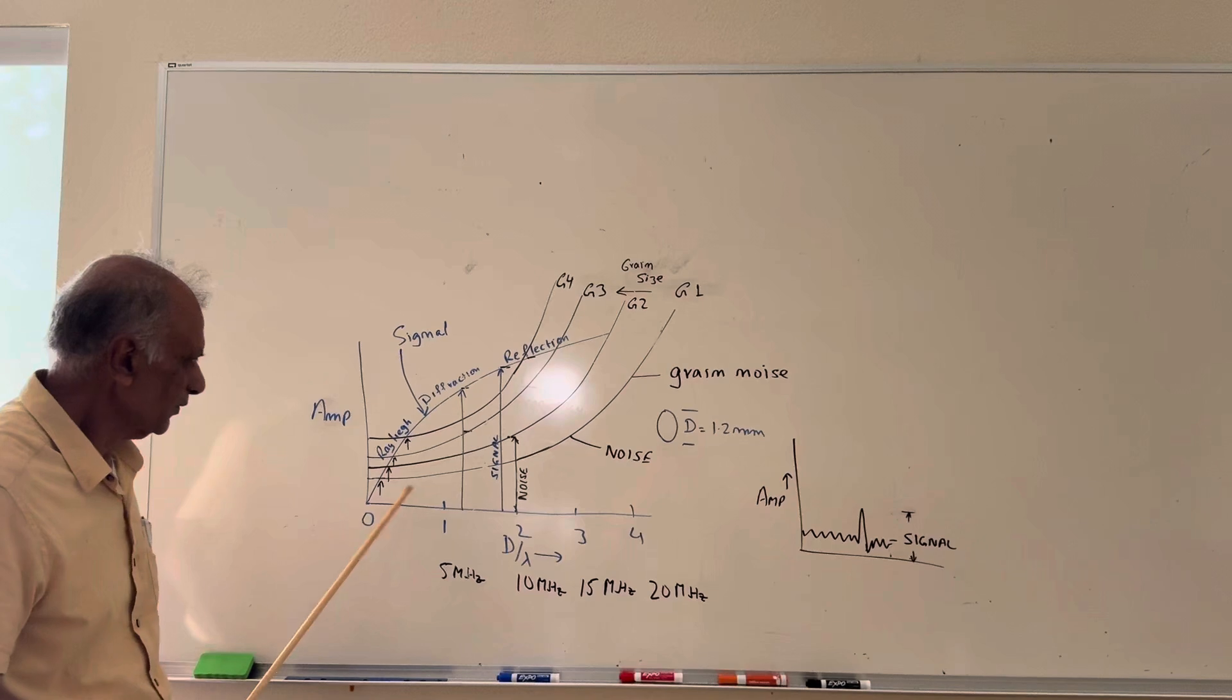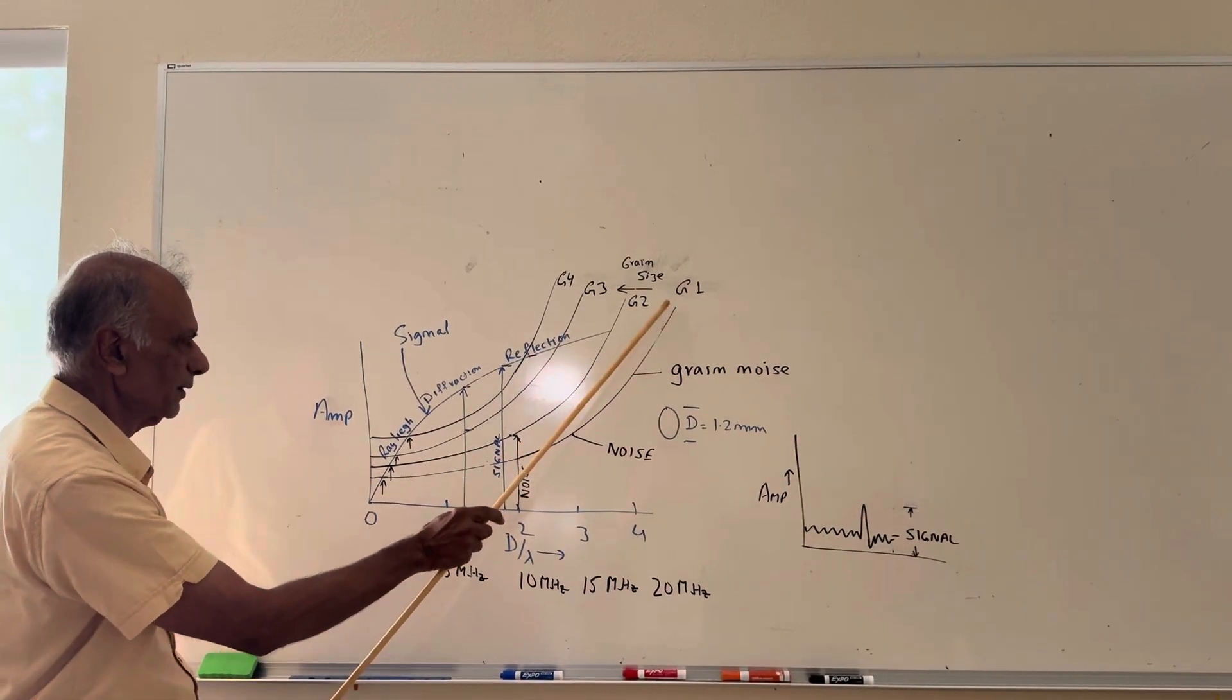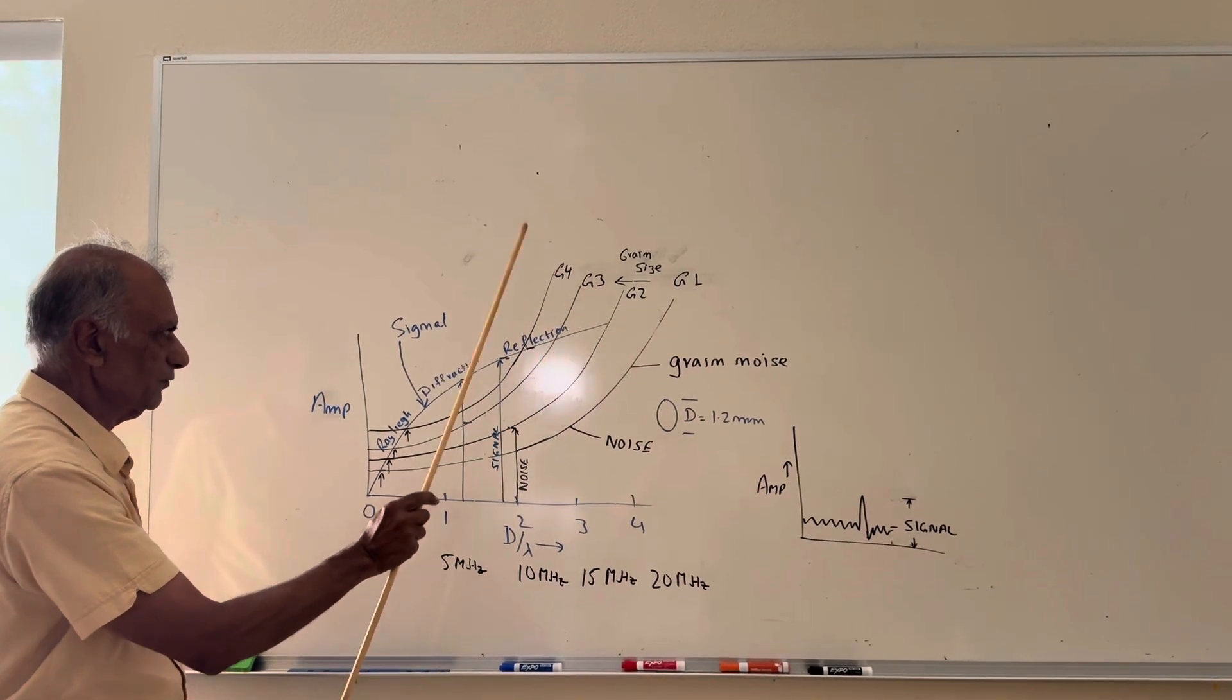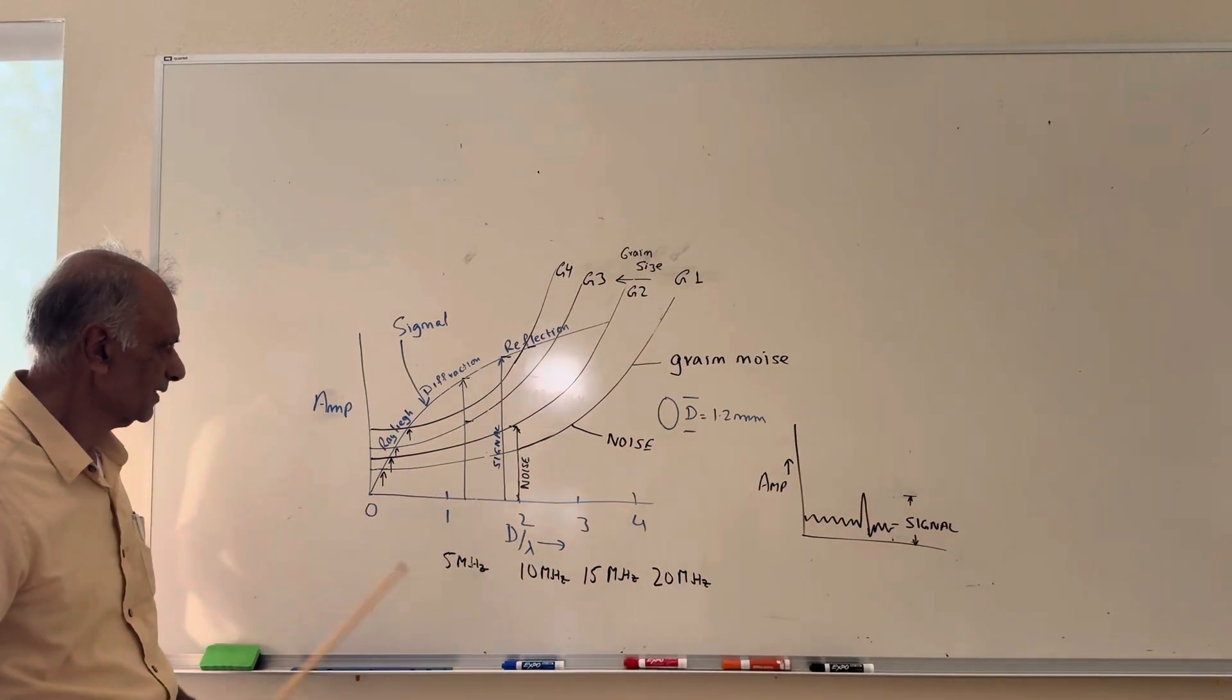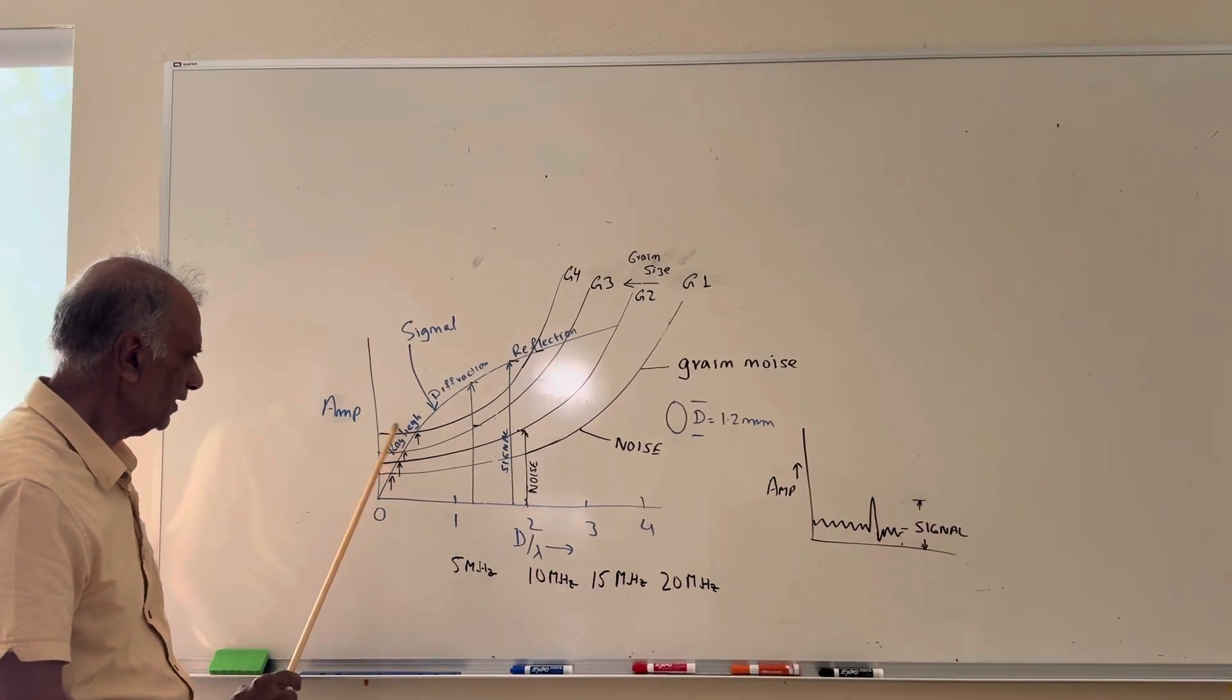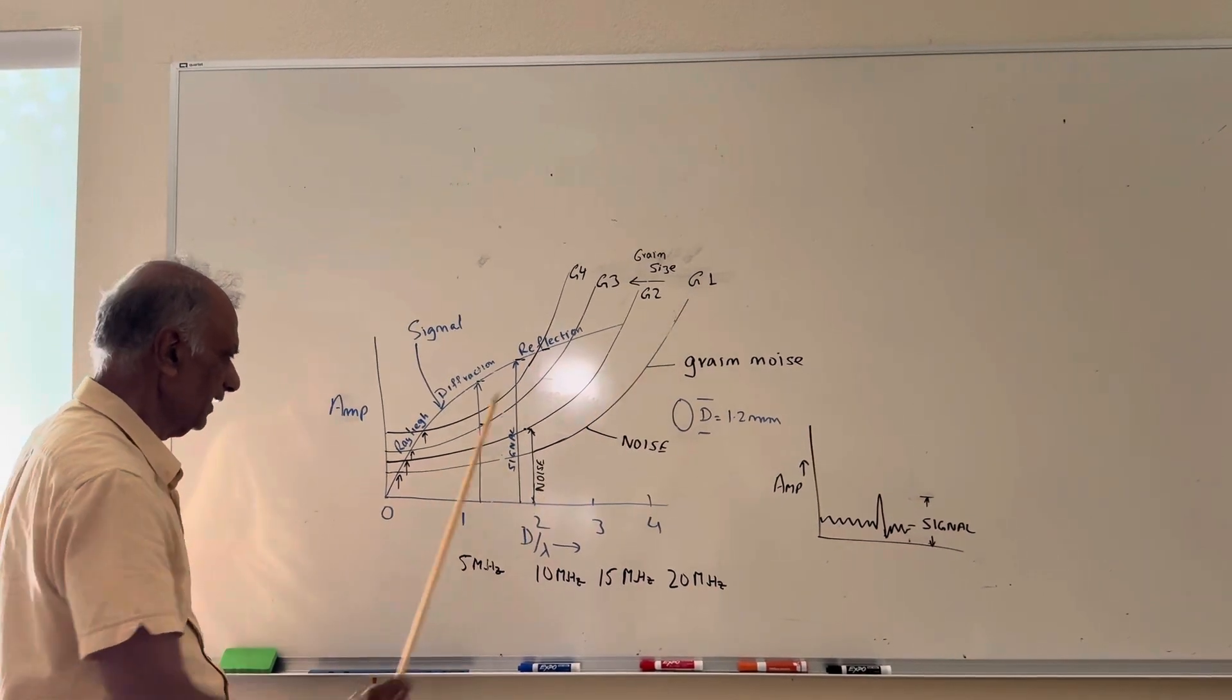What I've shown you here is three or four grain sizes—four grain sizes—and here is grain size G1, G2, G3, G4. G4 is the biggest grain size, and you can see that for G4 you have a higher noise from the grains compared to G1, which is smaller grains, and it's right here, which is the G1 line.